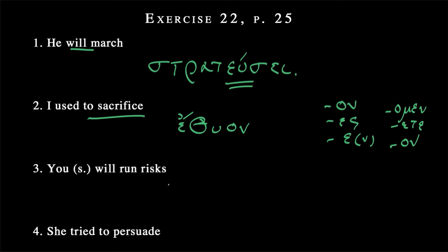You, singular, will run risks. Well, run risks is kinduneuō. It's kind of a mouthful, but you'll get used to it. You'll learn that kindunos is the word for risk, so it really is just like we can use the verb risking it in English. This is based off of a noun in Greek, or maybe it's the other way around. So kinduneuō is I am running risks, so now what do we need to do? We need to make this both future, will, and you, singular. So future, this is a fairly regular second principal part, but you need to know the principal part. Kinduneuō-sō is I will run risks, but we need to say you will.